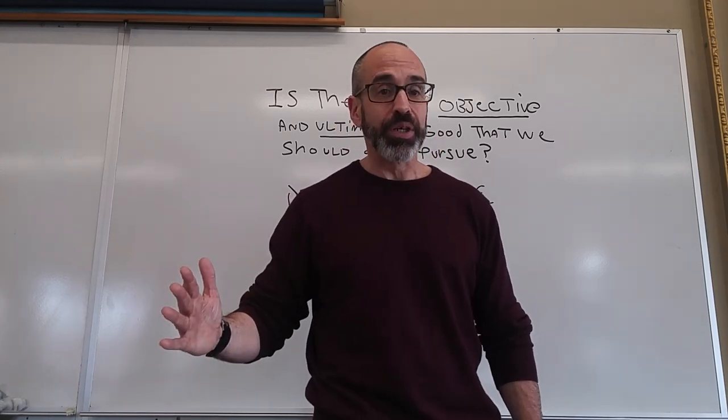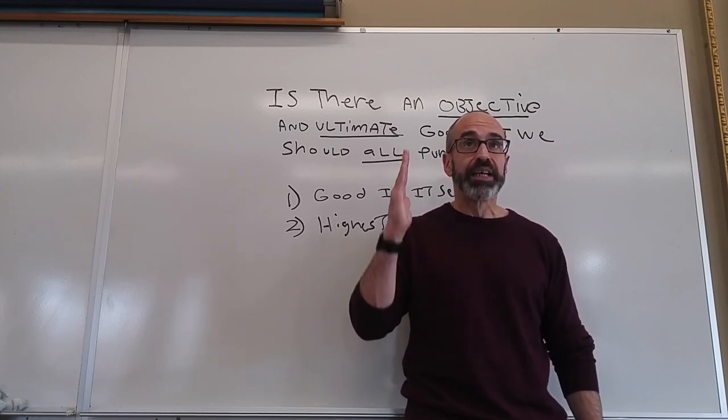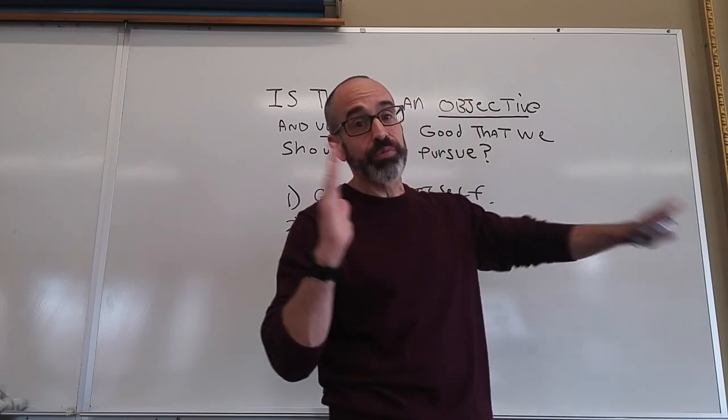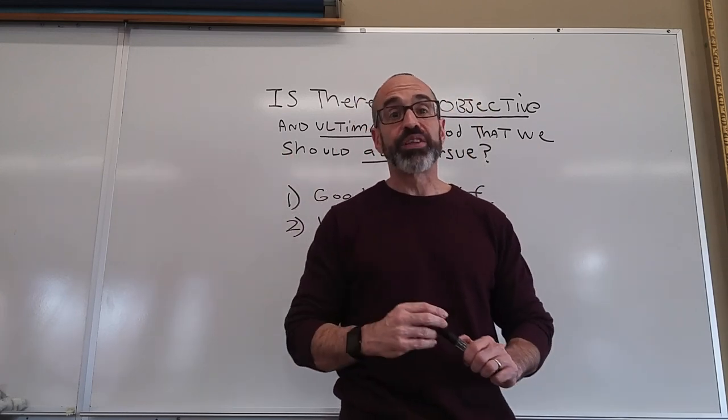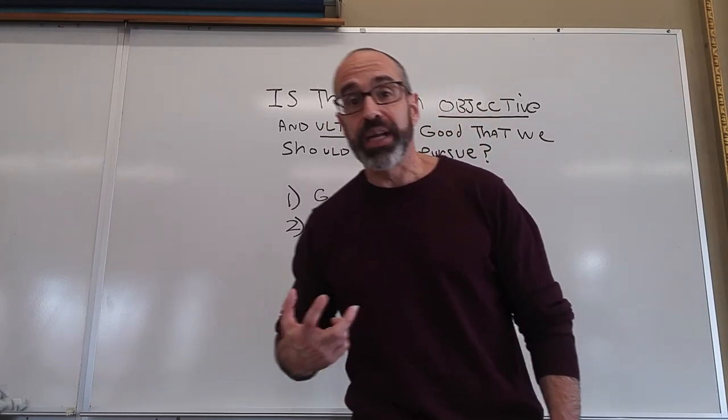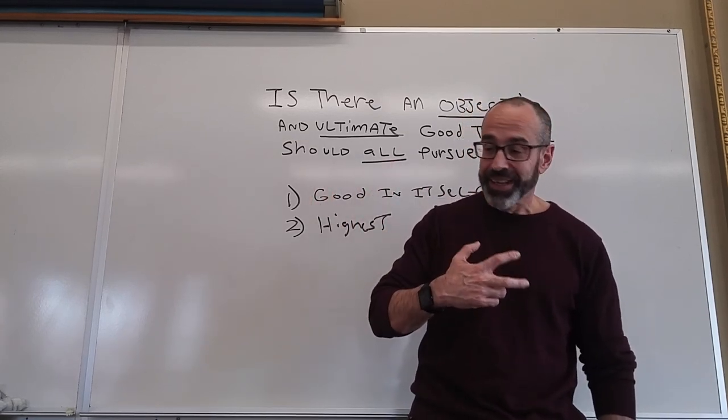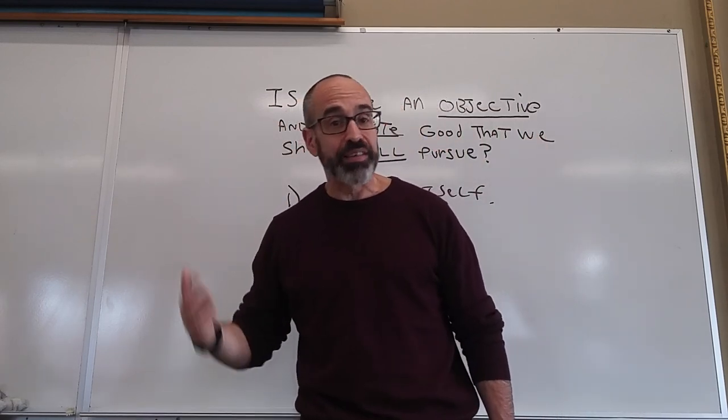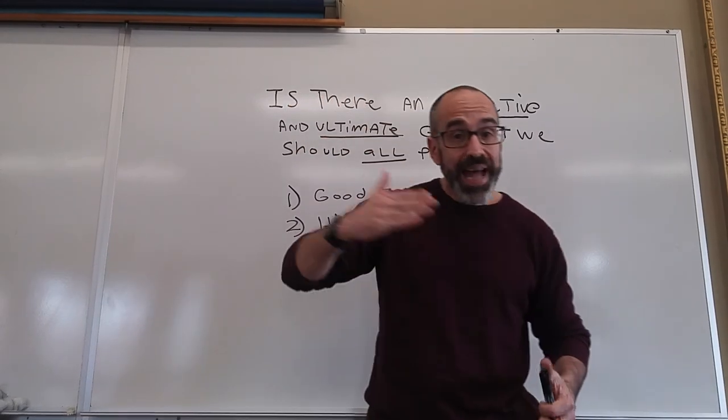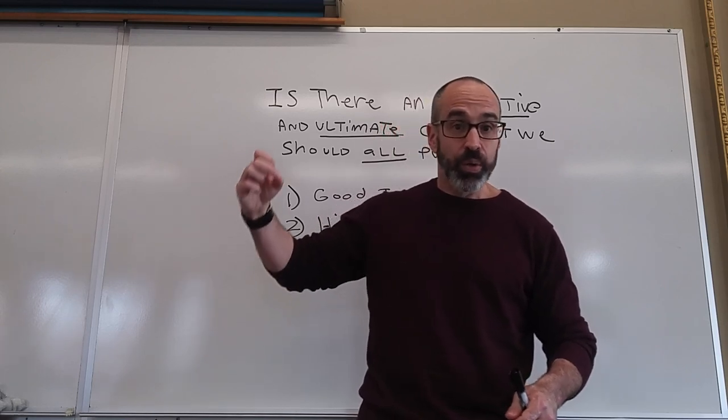Aristotle says as human beings we therefore always are pursuing something that's ultimately we value for itself. Otherwise everything else that we value for something else would have no value whatsoever. Say I decided to borrow money from my friend John, and John said wait, I need to borrow money in order to give you money. And then John goes and asks his friend and says wait, I have to borrow money in order to give you money. And that can't go on forever.